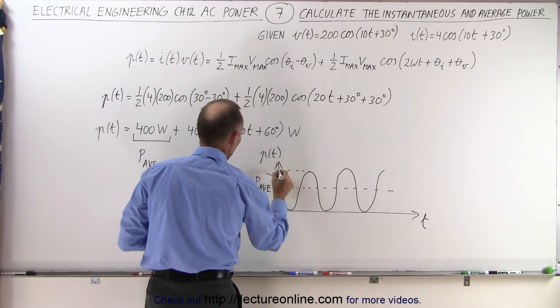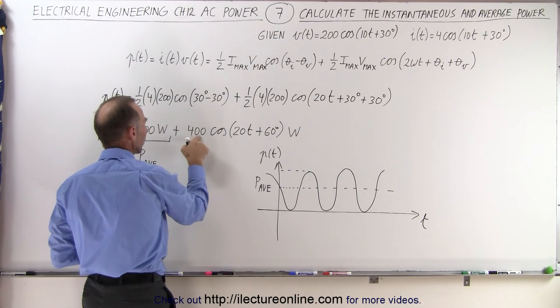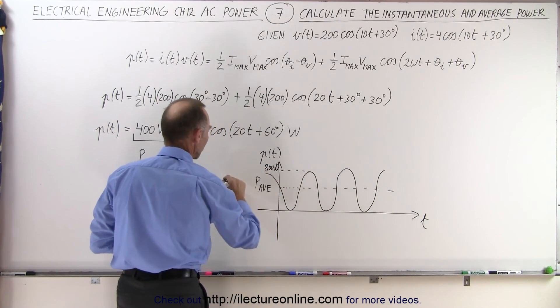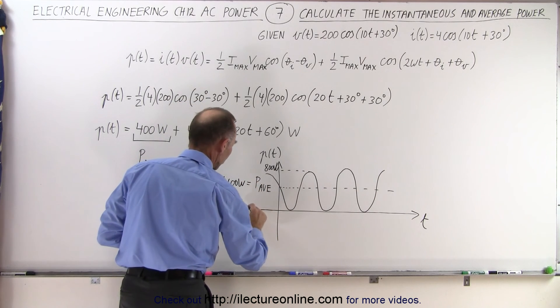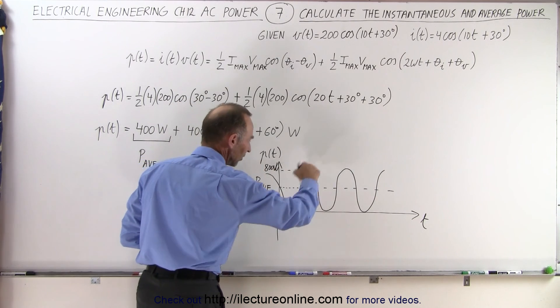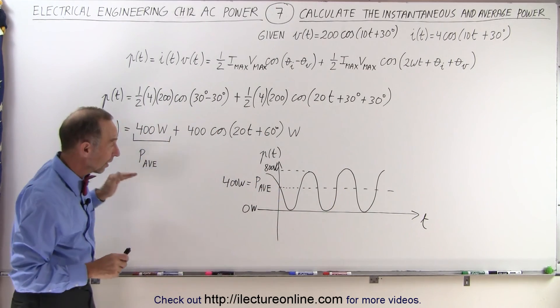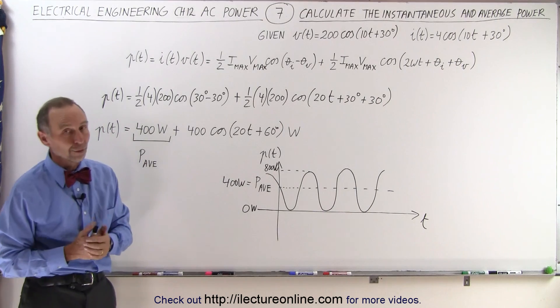The maximum value here would be equal to the average power plus the maximum amplitude, so that would be 800 watts at the top. Average power is 400 watts, and that would be 0 watts at the bottom. So you can see that the instantaneous power will oscillate between 0 and 800 watts, and the average power is 400 watts.